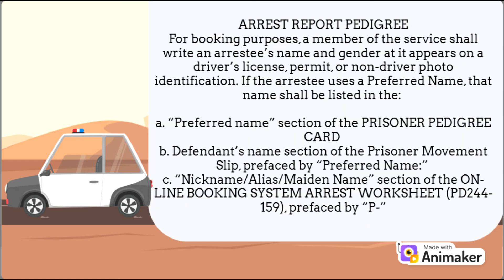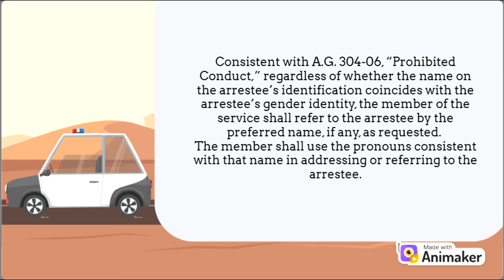Arrest Report Pedigree: for booking purposes, a member of the service shall write an arrestee's name and gender if it appears on a driver's license, permit, or non-driver photo identification. If the arrestee uses a preferred name, that name shall be listed in: (a) the preferred name section of the prisoner pedigree card; (b) the defendant's name section of the prisoner movement slip, prefaced by 'preferred name'; and (c) the nickname/alias/maiden name section of the online booking system arrest worksheet PD 244-159, prefaced by 'P.' Consistent with AG 300-406, prohibited conduct, regardless of whether the name on the arrestee's identification coincides with the arrestee's gender identity, the member of the service shall refer to the arrestee by the preferred name, if any, as requested. The member shall use pronouns consistent with that name in addressing or referring to the arrestee.